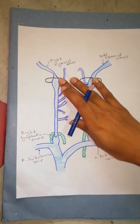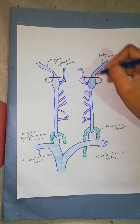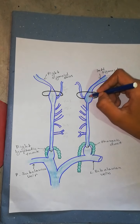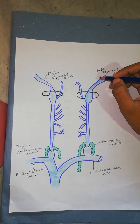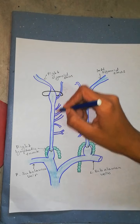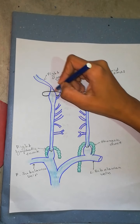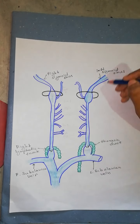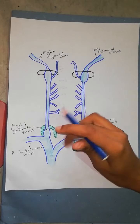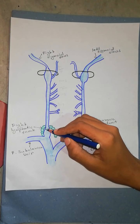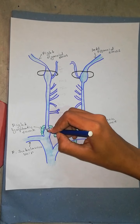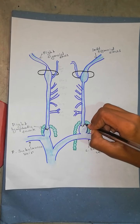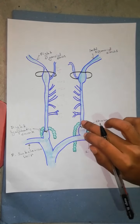Here you can see the jugular foramen and the sigmoid sinus. We can see that the internal jugular vein starts as a continuation of the sigmoid sinus. Its upper end is dilated to form the superior bulb. At its lower end, there is also a small dilation with a valve, called the inferior bulb.